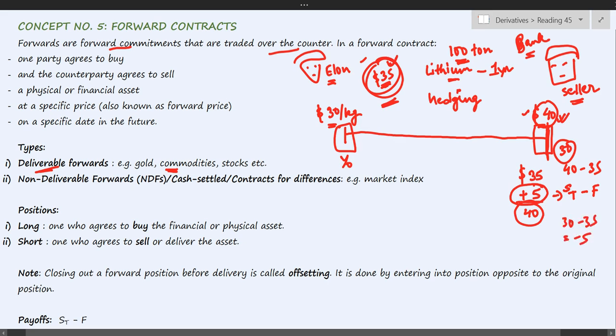This is called the payoff. The position of the buyer, the position that Elon has taken in this case, is called the long position because he is buying the underlying, and the position of the seller is called short in market terminology.